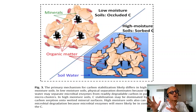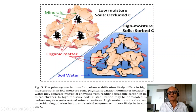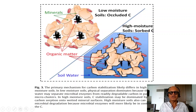Part of carbon capture may involve creating biochar out of biogenic material and spreading it on the soil, putting carbon into the soil, which makes the soil very healthy and increases crop yields. When you have low moisture soils with occluded carbon, minerals and organic matter are arranged in a certain way. In high moisture soils, carbon is sorbed onto the soils rather than occluded. The primary mechanism for carbon stabilization likely differs between high and low moisture soils.